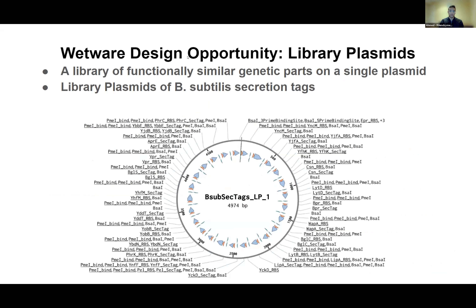Another example of what we're doing in wetware design: we're designing library plasmids of secretion tags that we can drop into a golden gate reaction and cut with our endonucleases, basically randomizing which RBS–secretion tag combination we add to our plasmid. Then we can optimize based on the colonies.